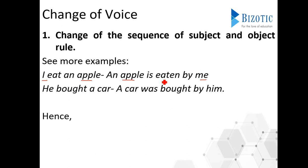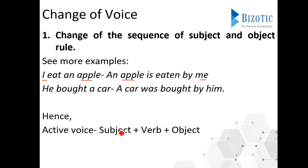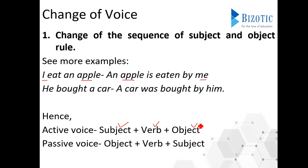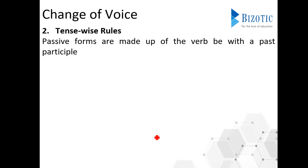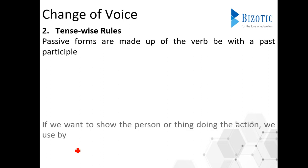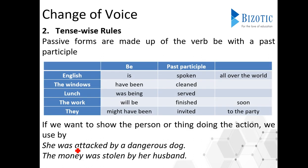In active voice, the structure is: subject, then verb, then object. In passive voice, it is exactly the reverse — object comes first, and then the subject comes at the end. The second rule is the tense voice rule. Passive forms are made up of the verb 'be' with a past participle. For example, 'English is spoken all over the world,' where 'is' is the form of 'be' and 'spoken' is the past participle.